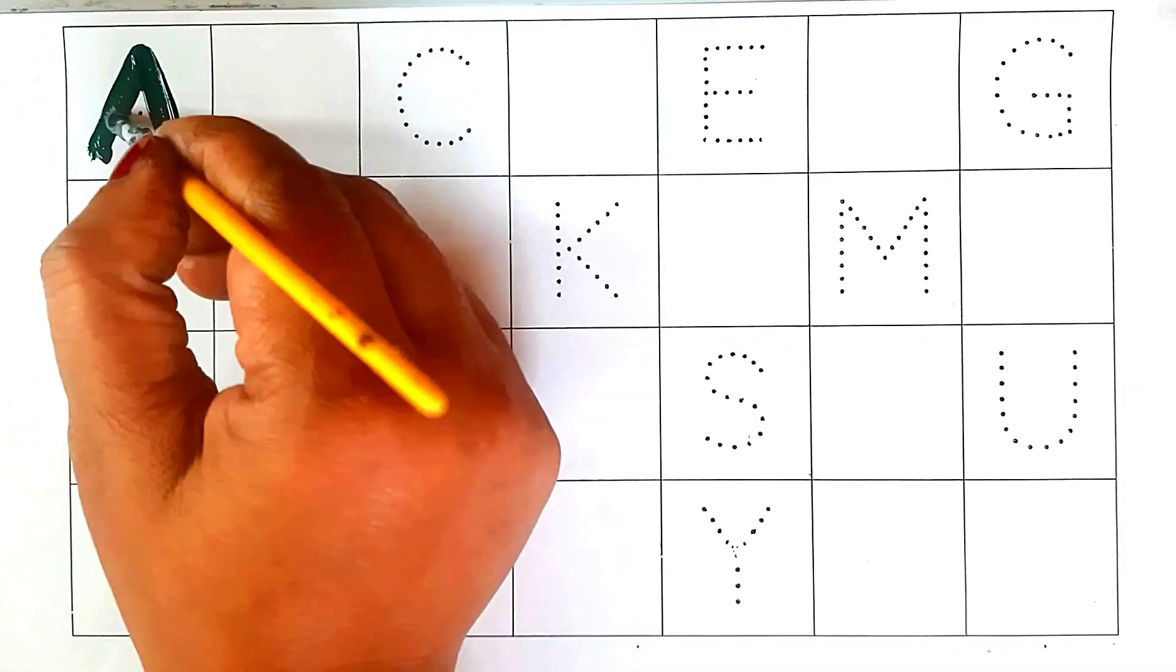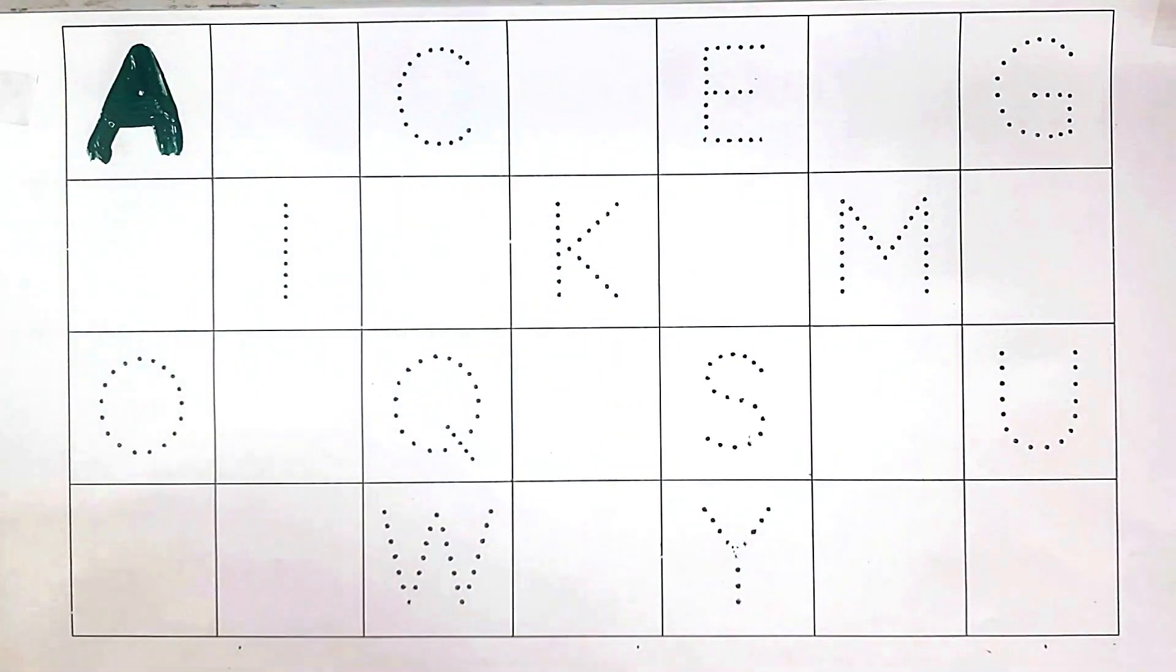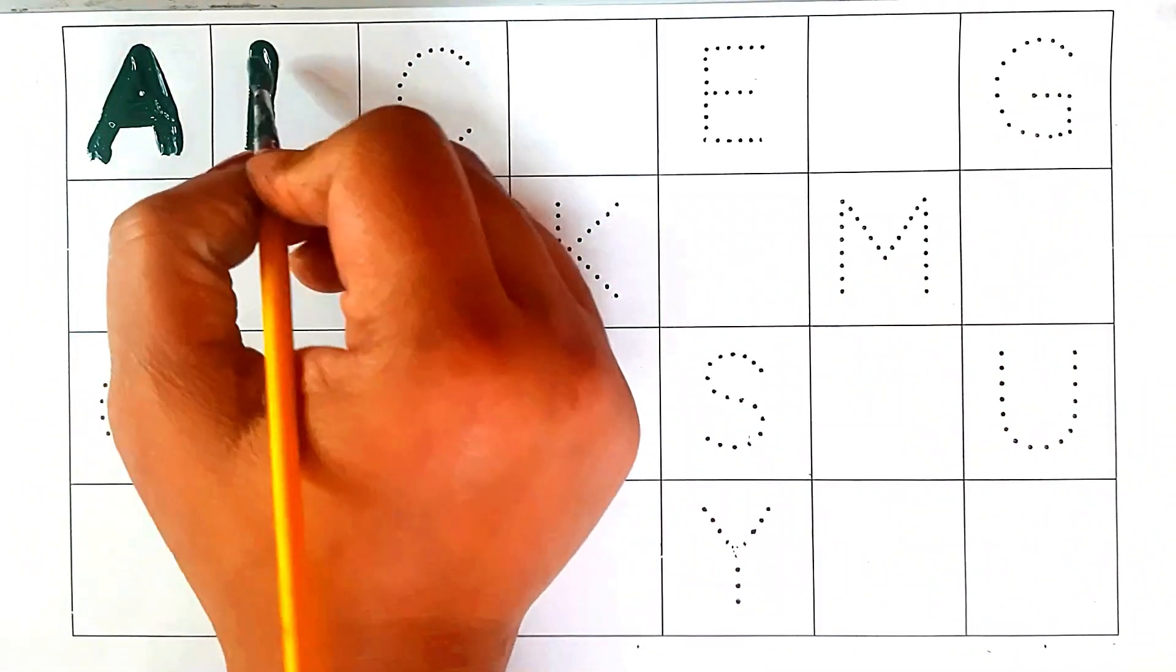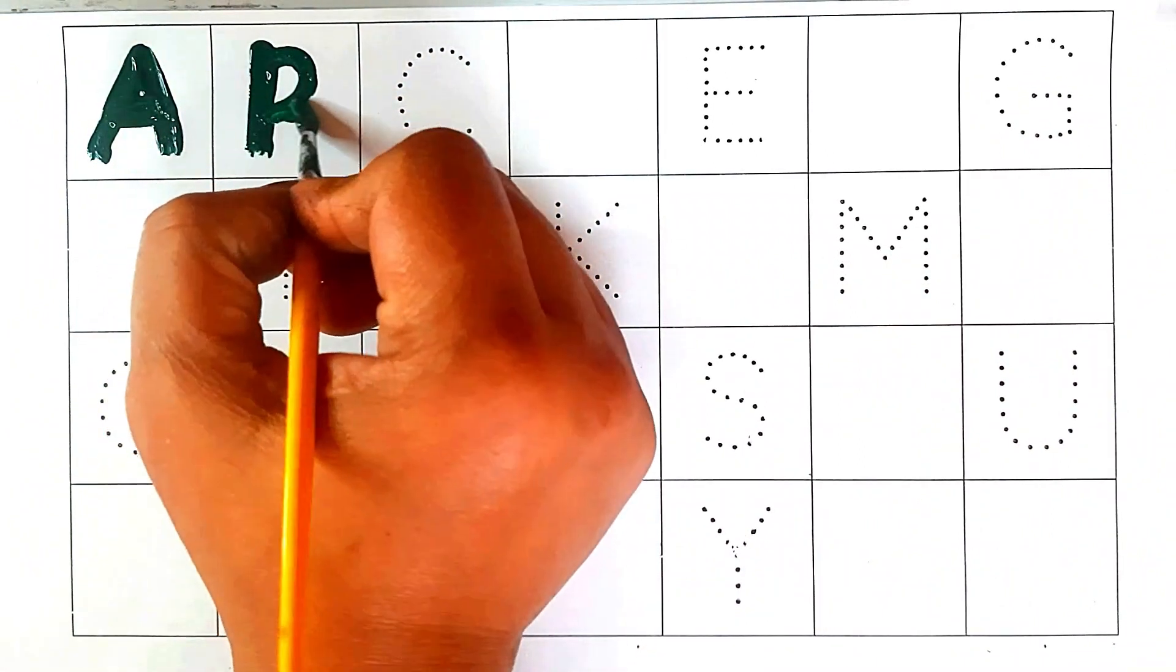A, A for apple. Blue color. B, B for banana.